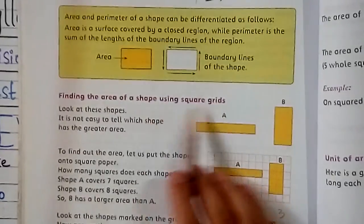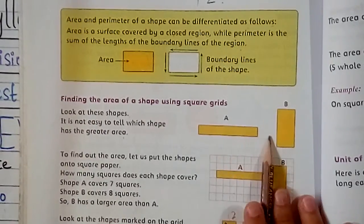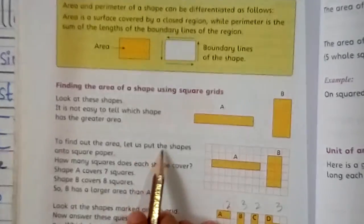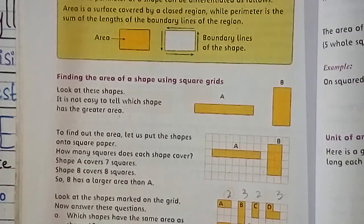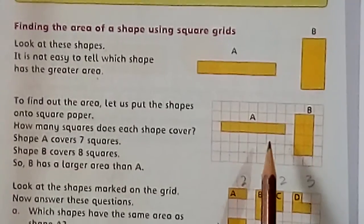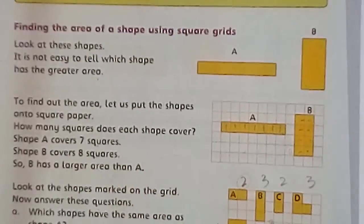Finding the area of a shape using square grids: look at these shapes — it is not easy to tell which shape has the greater area. Here you have two shapes and you cannot decide by looking at them which area is larger. To find out the area, let us put the shapes onto square paper. When we place them on square paper, we get these figures. How many squares does each shape cover? Let's count: one, two, three, four, five, six, seven — shape A covers seven squares. Now for shape B: one, two, three, four, five, six, seven, eight — shape B covers eight squares.